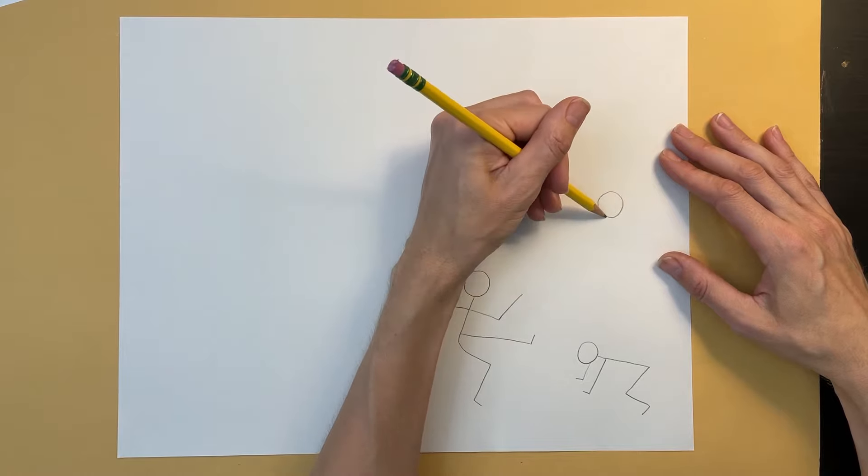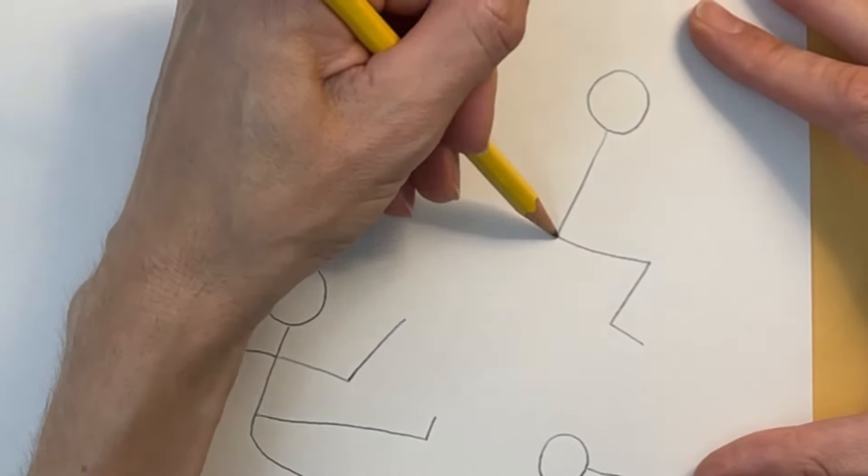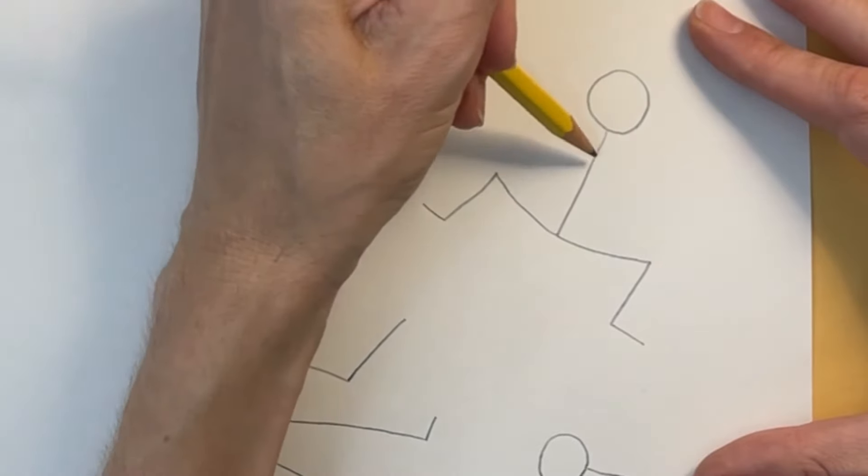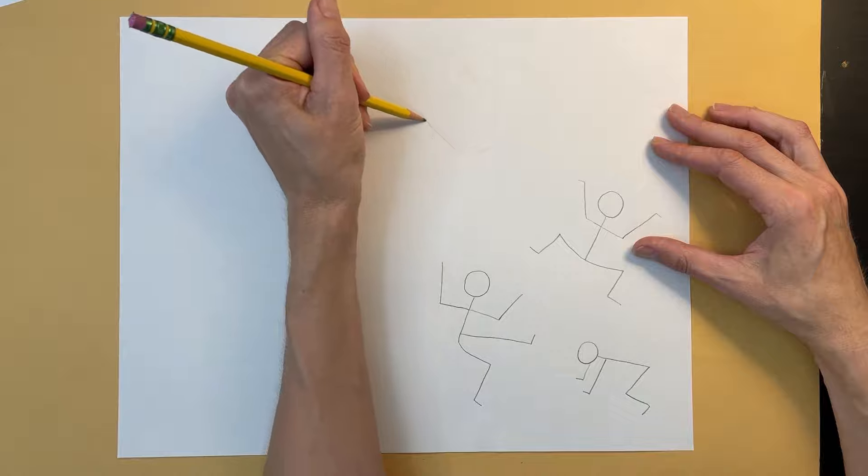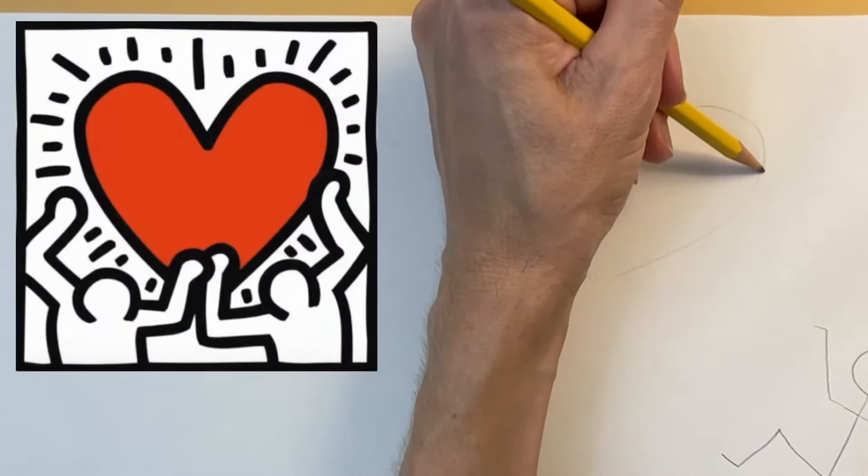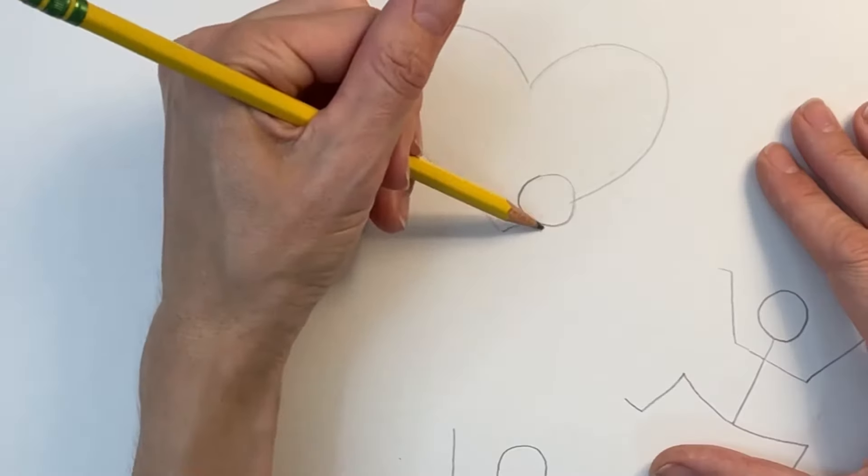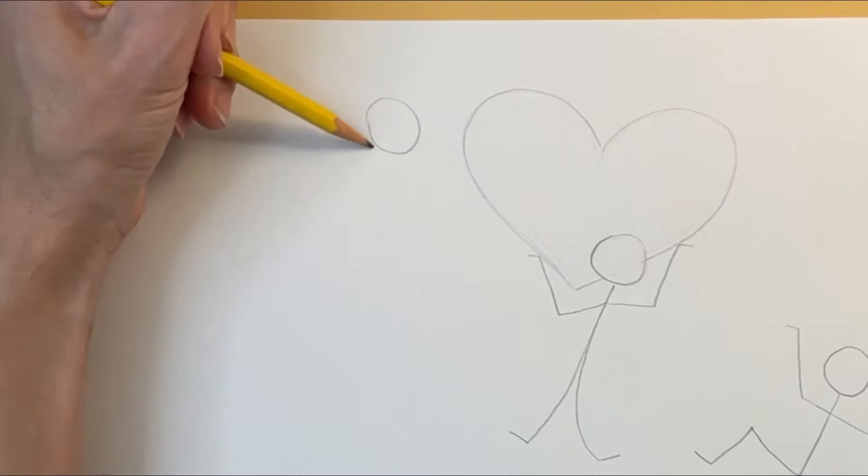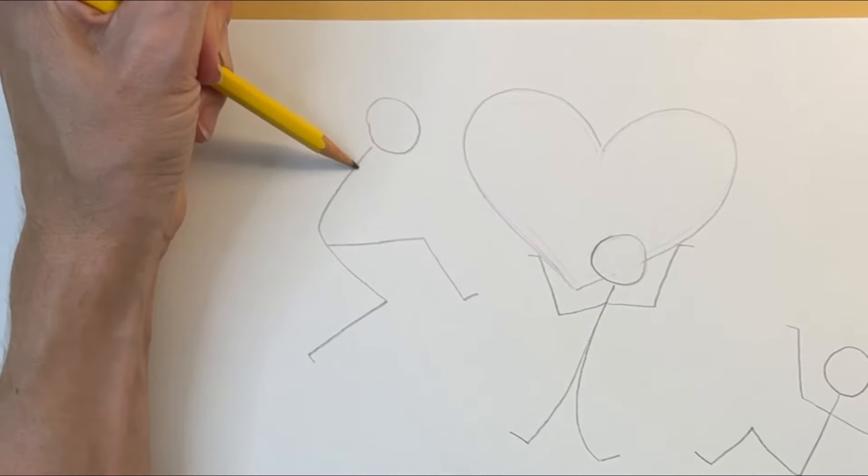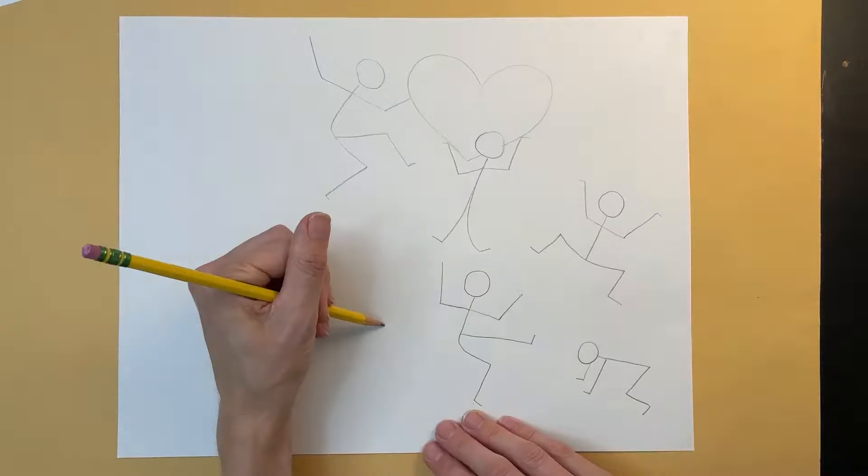This person is going to look like they're jumping into the air with legs bent out to the side and arms raised above the head. I'm drawing a large heart up top reminiscent of this very famous print by Haring. I'm adding a stick figure holding up the heart and right next to the heart another stick figure jumping up into the air. Here I've got an upside down stick figure that's doing a cartwheel.